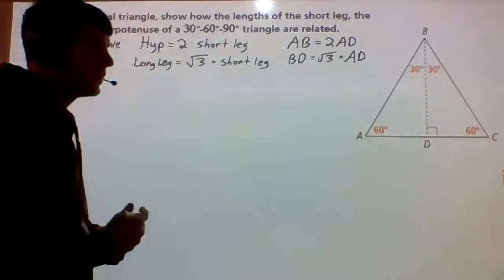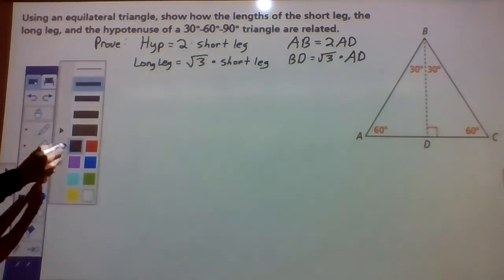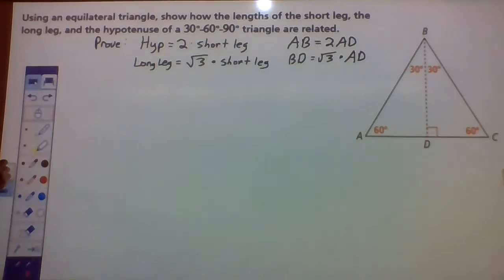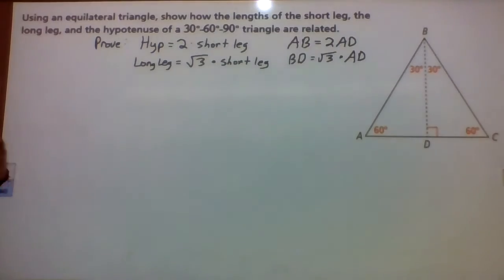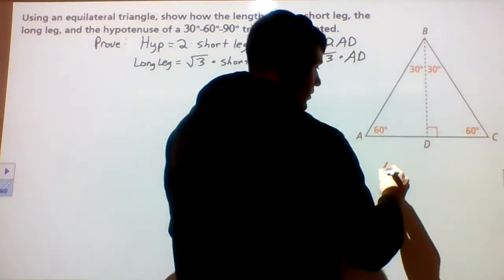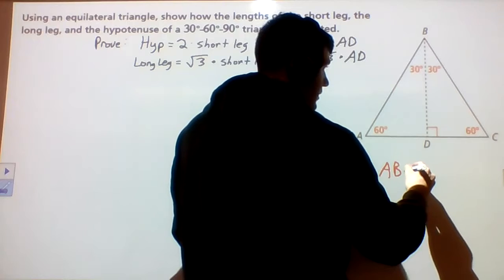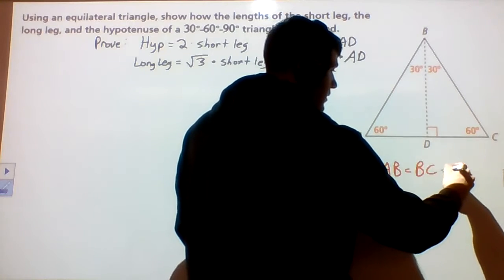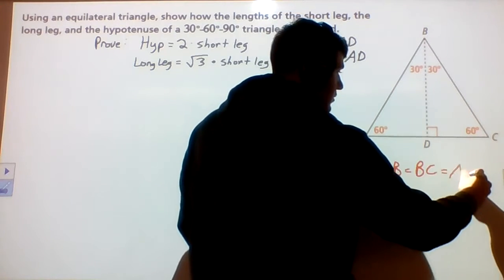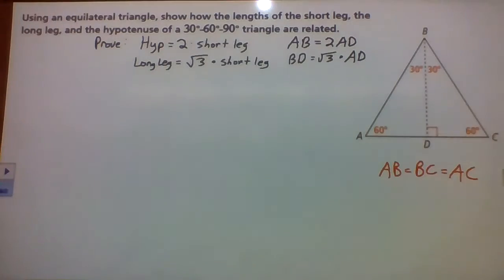We know this is an equilateral triangle — they're telling us the big one, ABC, is an equilateral triangle. So if it's equilateral, we know all three sides of that triangle are the same length. So we know AB is equal to BC, which is equal to AC. All three sides of the big triangle are the same length.